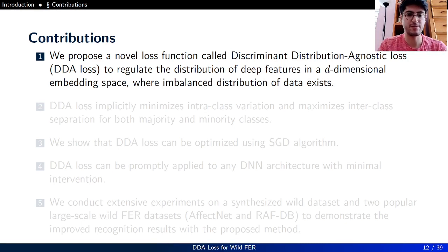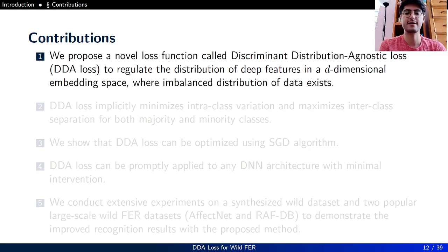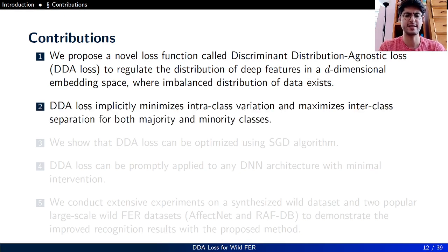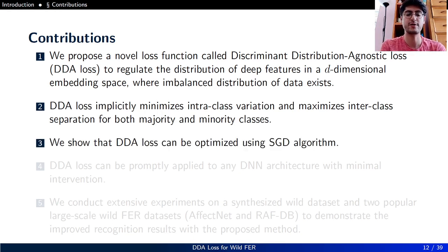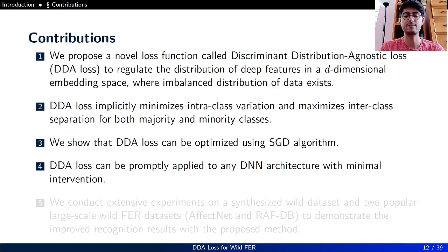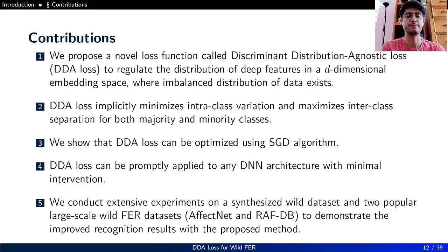To summarize our contribution: we propose a novel loss function called Discriminant Distribution-Agnostic Loss to regulate the distribution of deep features in a d-dimensional embedding space where imbalanced distribution of data exists. DDA Loss implicitly minimizes intra-class variation and maximizes inter-class separation for both majority and minority classes. We show it can be optimized using standard stochastic gradient descent, can be promptly applied to any deep neural network architecture with minimal intervention, and we conduct extensive experiments on a synthesized wild dataset and two popular large-scale wild FER datasets, AffectNet and RAF-DB.